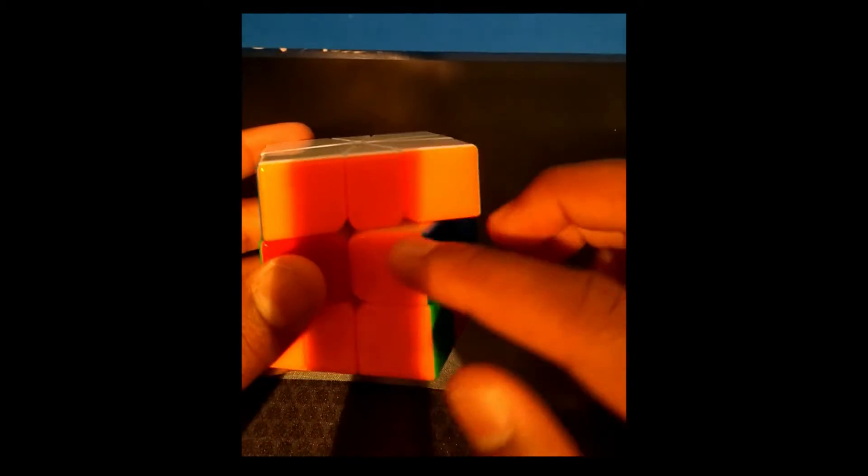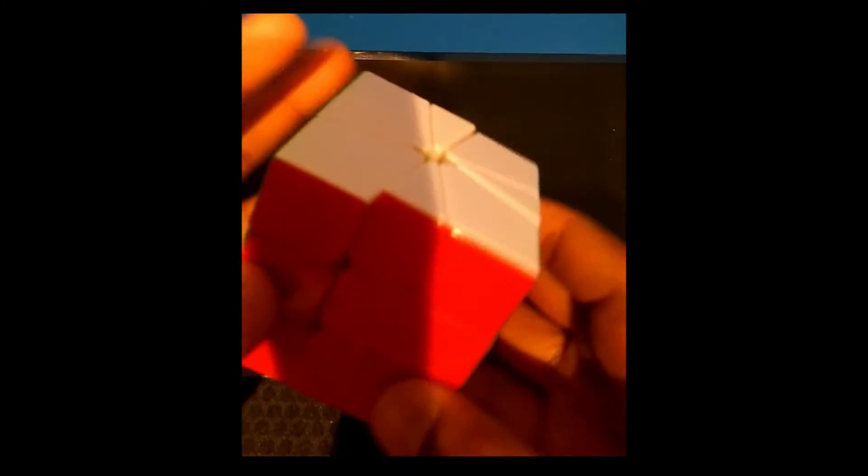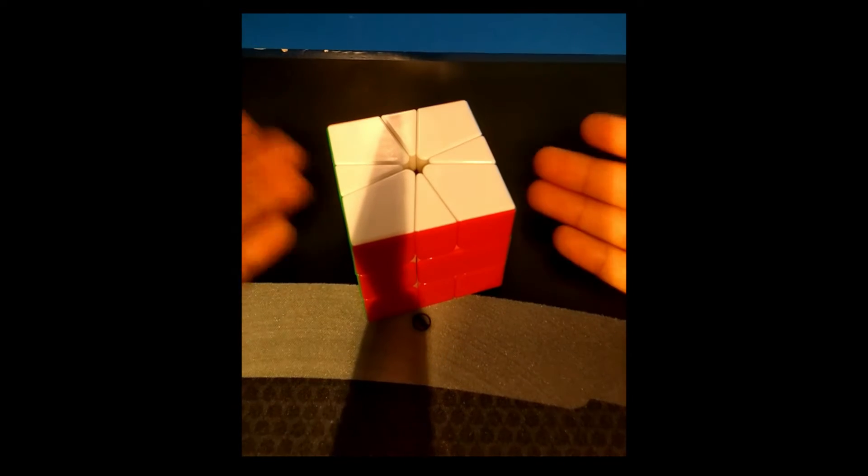Then you're just left with the U perm on bottom with the middle flipped, so just do the U perm and cancel into the flip, AUF, and it's done.